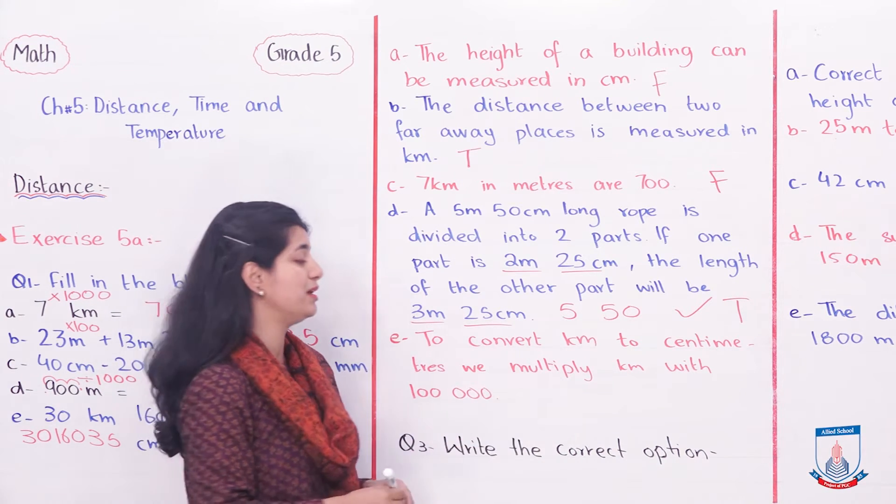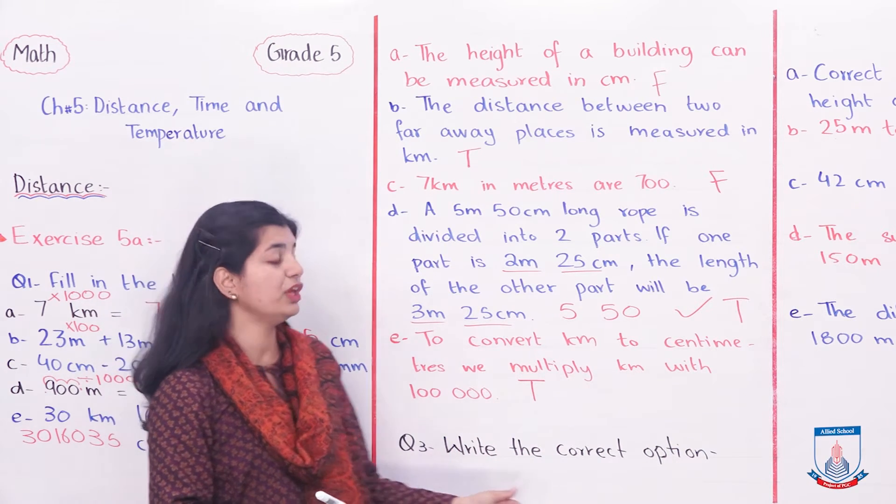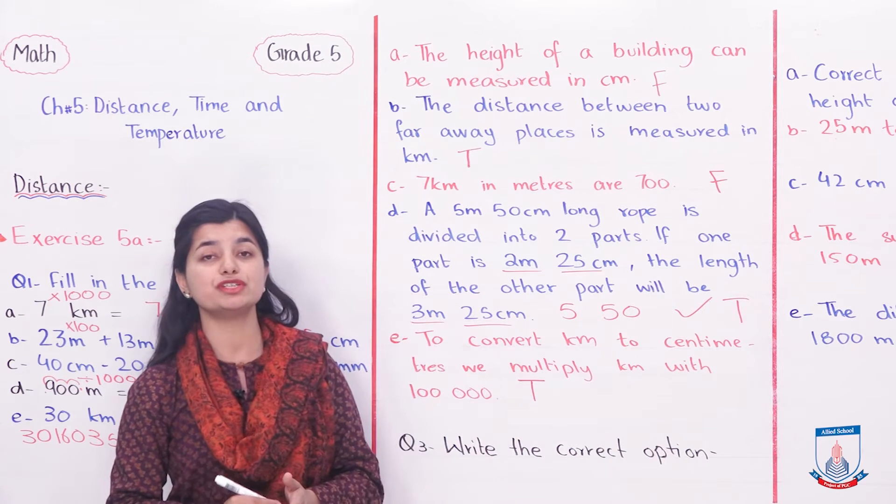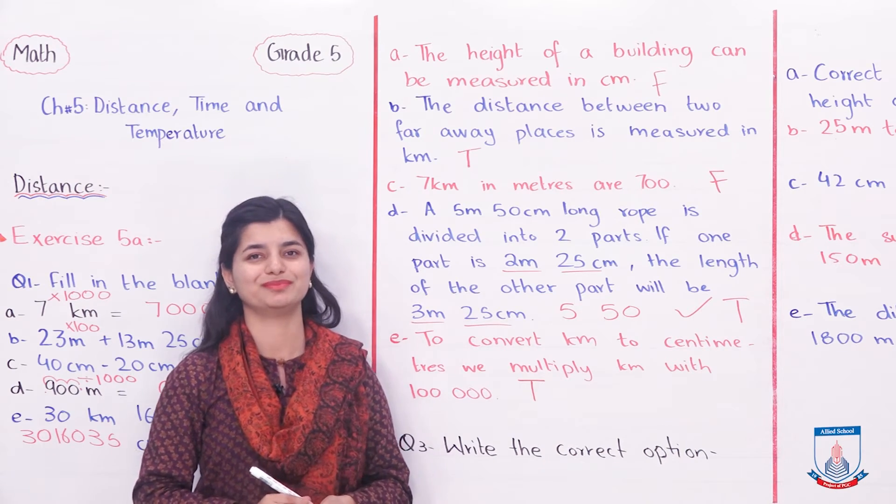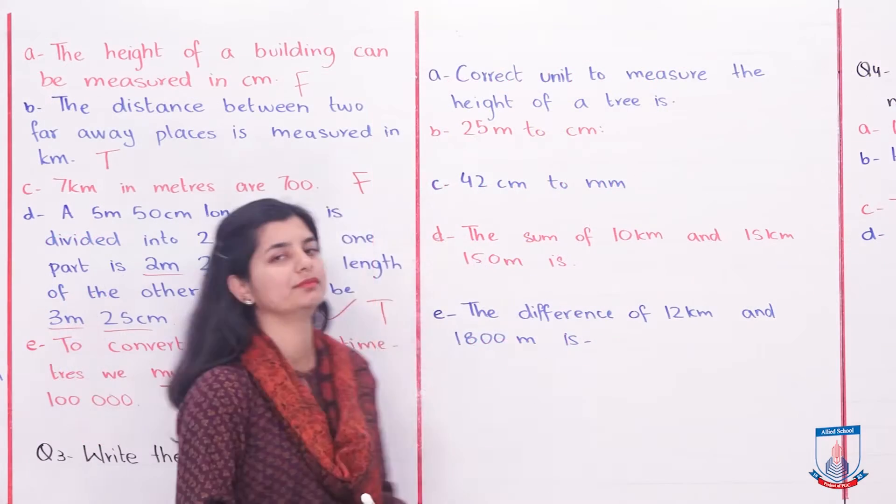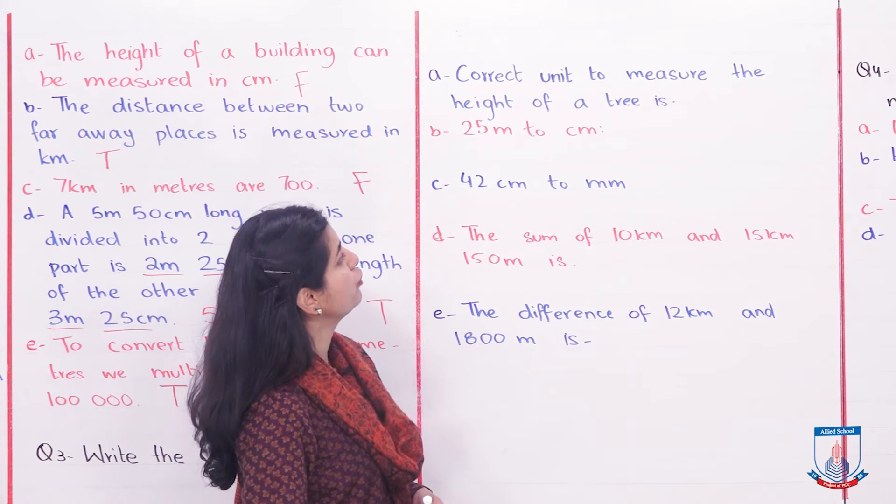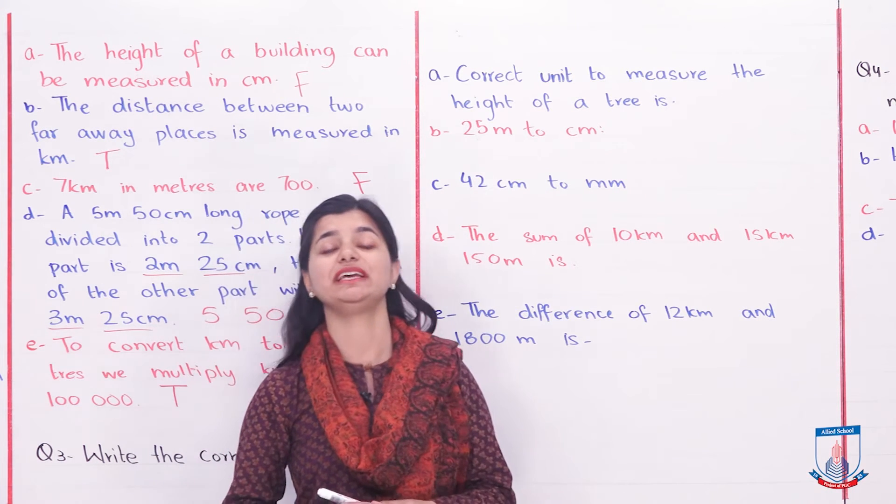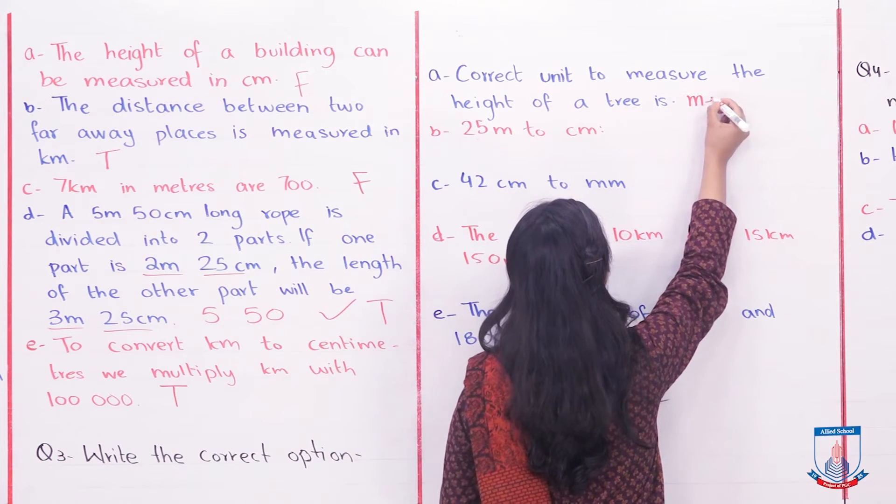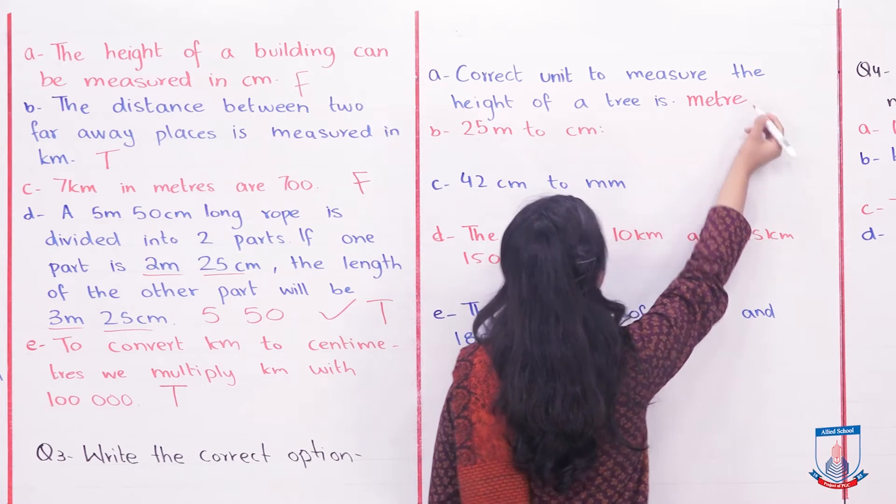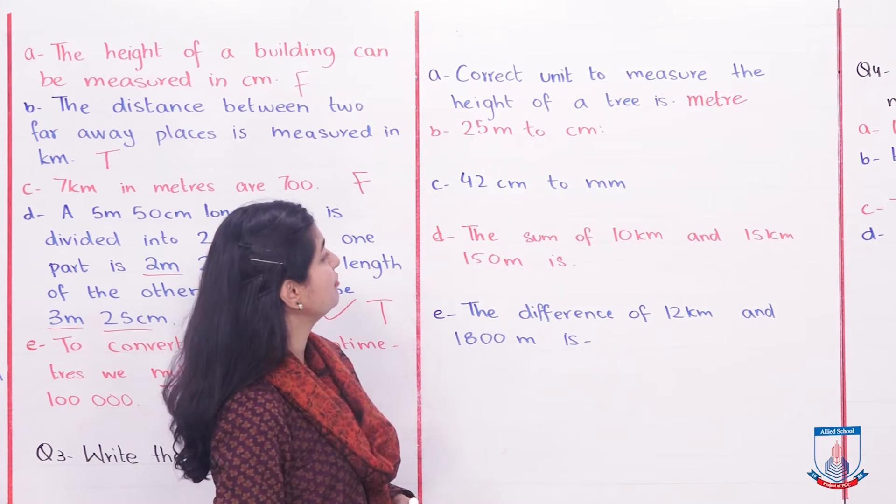Now let's look at question number 3. You have to circle the correct options. Part A: Correct unit to measure the height of a tree is meters. We can use meters for that.